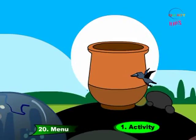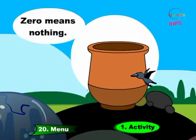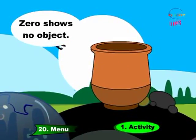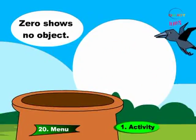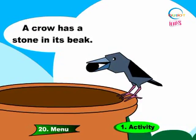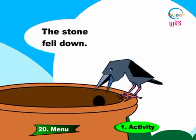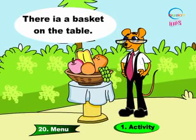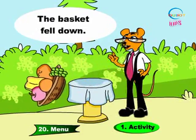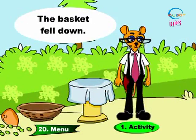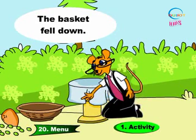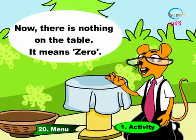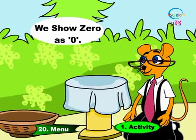Number zero. Zero means nothing. Zero shows no object. For example, a crow has a stone in its beak. The stone fell down. Now there is nothing in its beak — it means zero. There is a basket on the table. The basket fell down. Now there is nothing on the table. It means zero. We share zero.